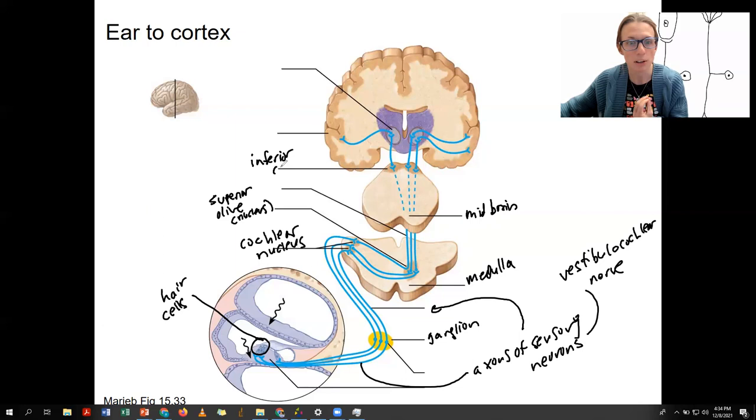You know about your colliculi. Baby butt on a toilet seat. So this is the toilet seat. You saw in the sheep brain. So synapse there in the midbrain.